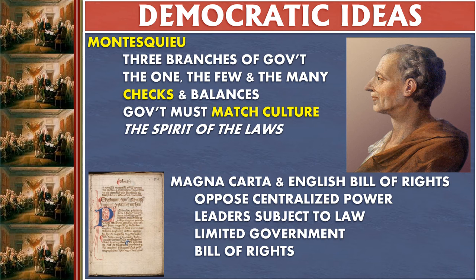That was very important because there weren't a lot of examples of democracies when the American colonists were going for independence — they couldn't just look at a democratic country and see how it operates. The other thing that comes from Montesquieu is that the government must match the culture, which means you can't just design institutions by themselves — they have to fit the culture and beliefs of the public. Different societies, different climates, different beliefs match certain institutions. The book that Montesquieu wrote these ideas in was called The Spirit of the Laws, and what he meant is that laws have a culture behind them and you have to look at the culture that supports the laws.